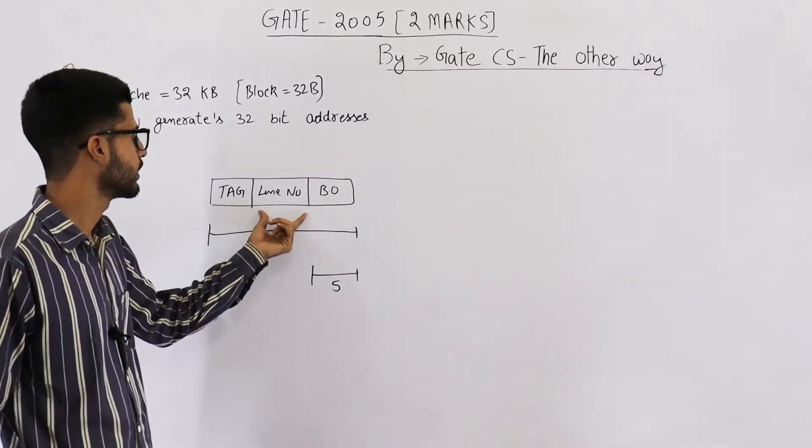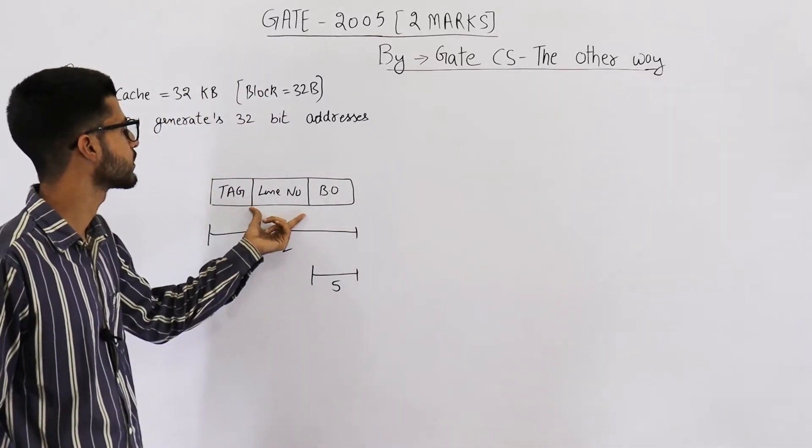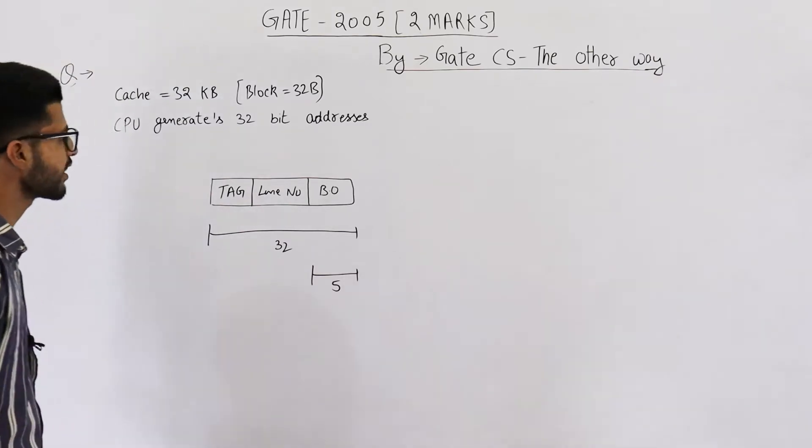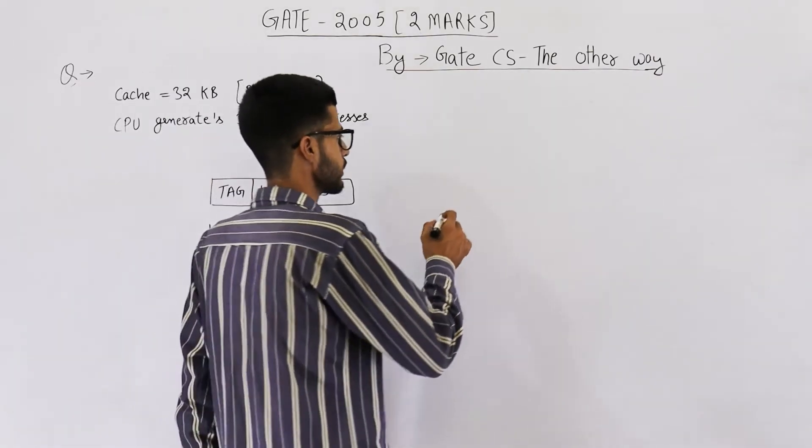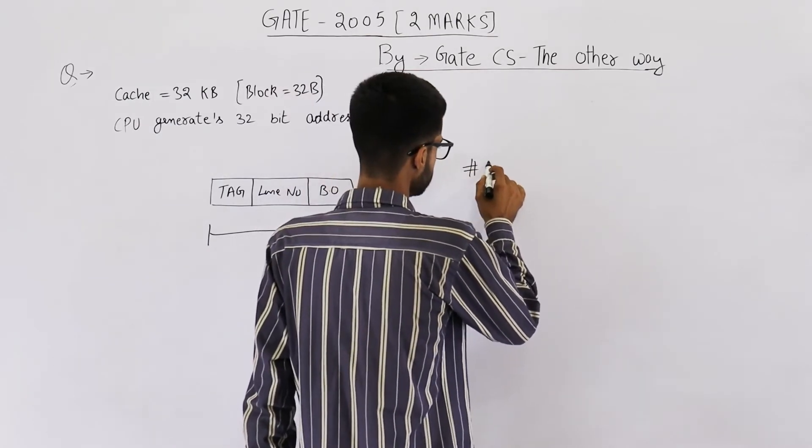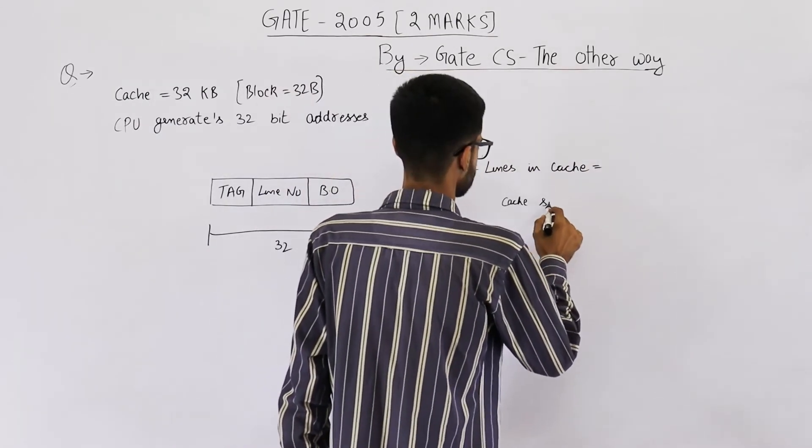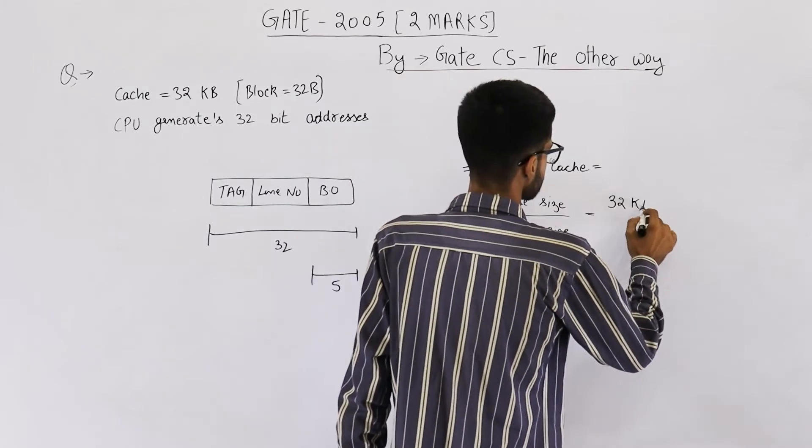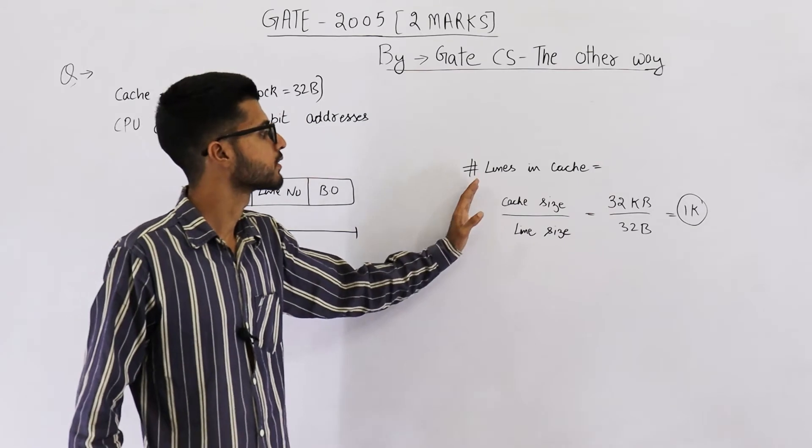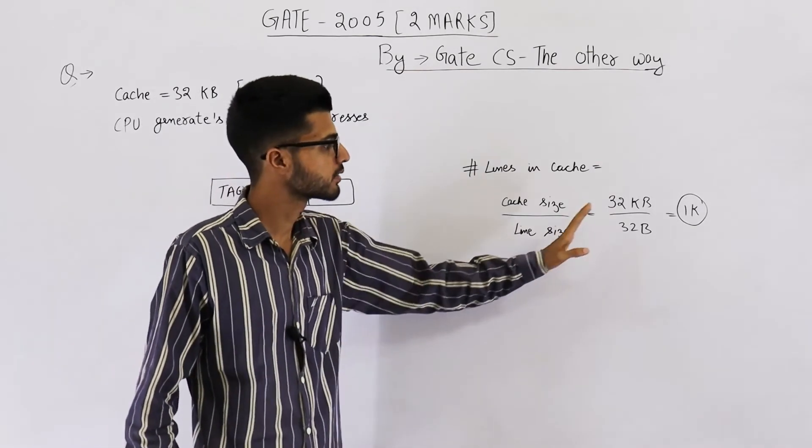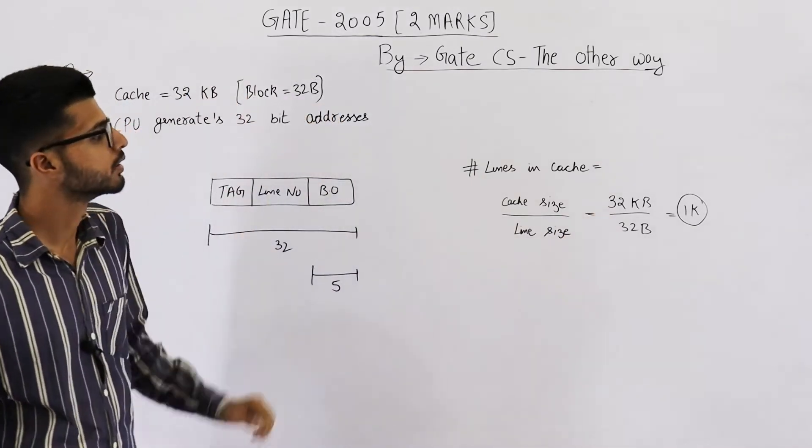Now let's find how many bits will be this line number field. For that we need to know the number of lines in cache. So number of lines in cache will be cache size divided by line size, that is 32 KB by 32 B.